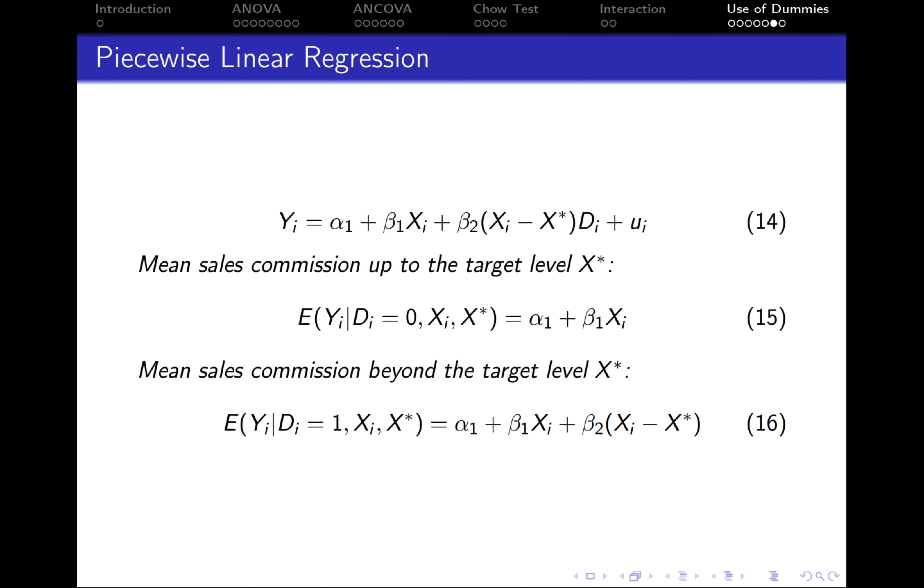Let's now look at the interpretation of this regression. Up to the target level, the mean sales commission is the following. Since the dummy variable equals 0, this whole term disappears and what is left is just alpha 1 plus beta 1 Xi. This is the function for sales commission up to the target level.